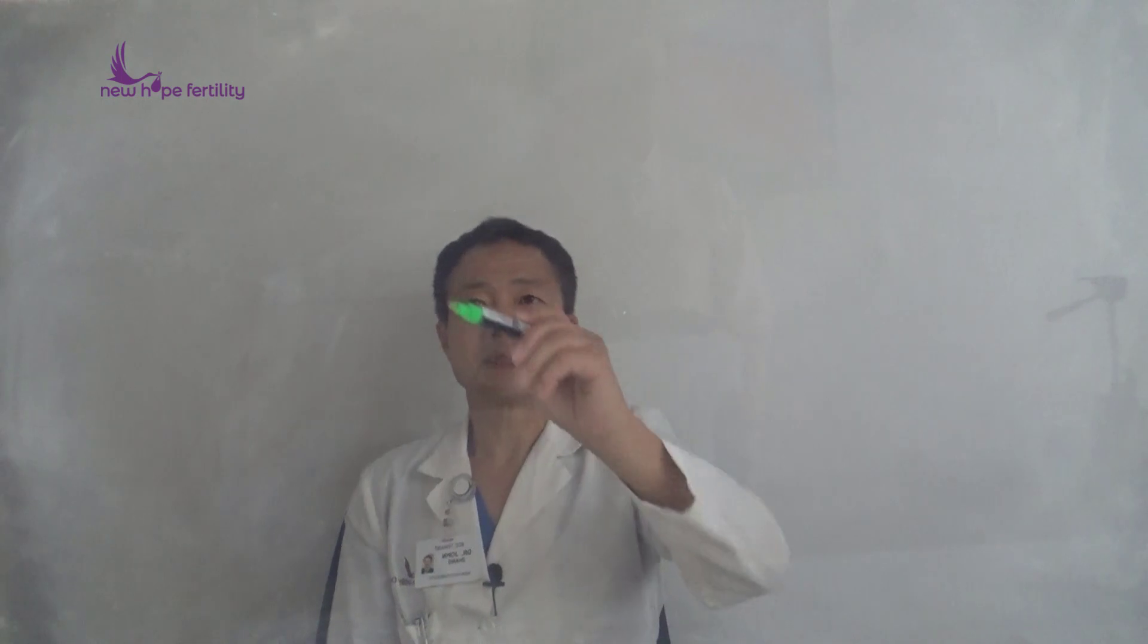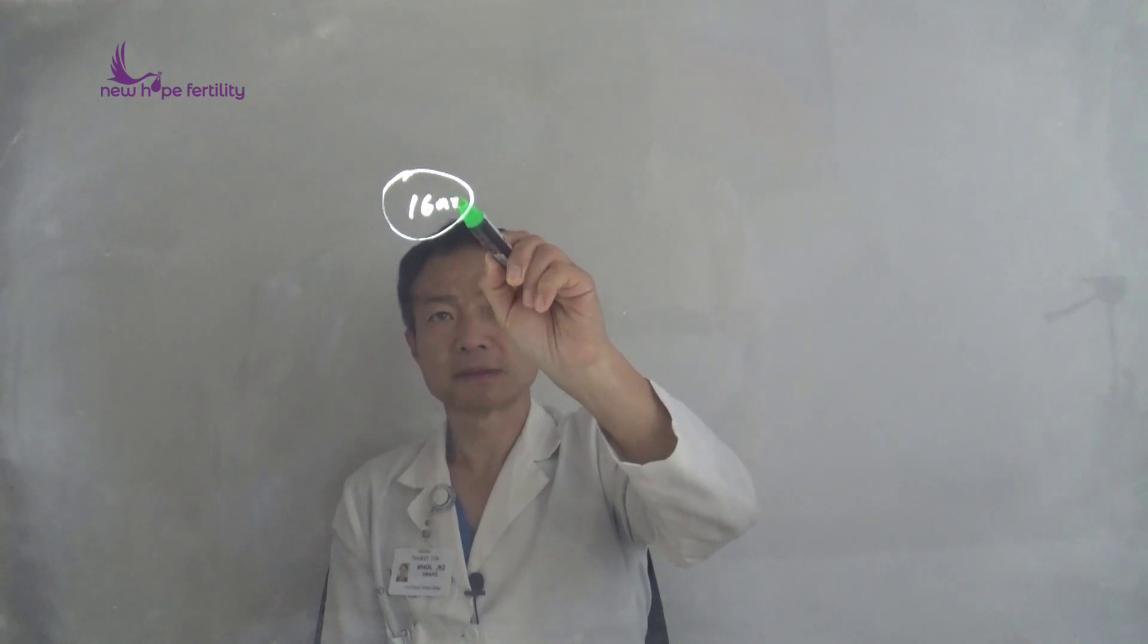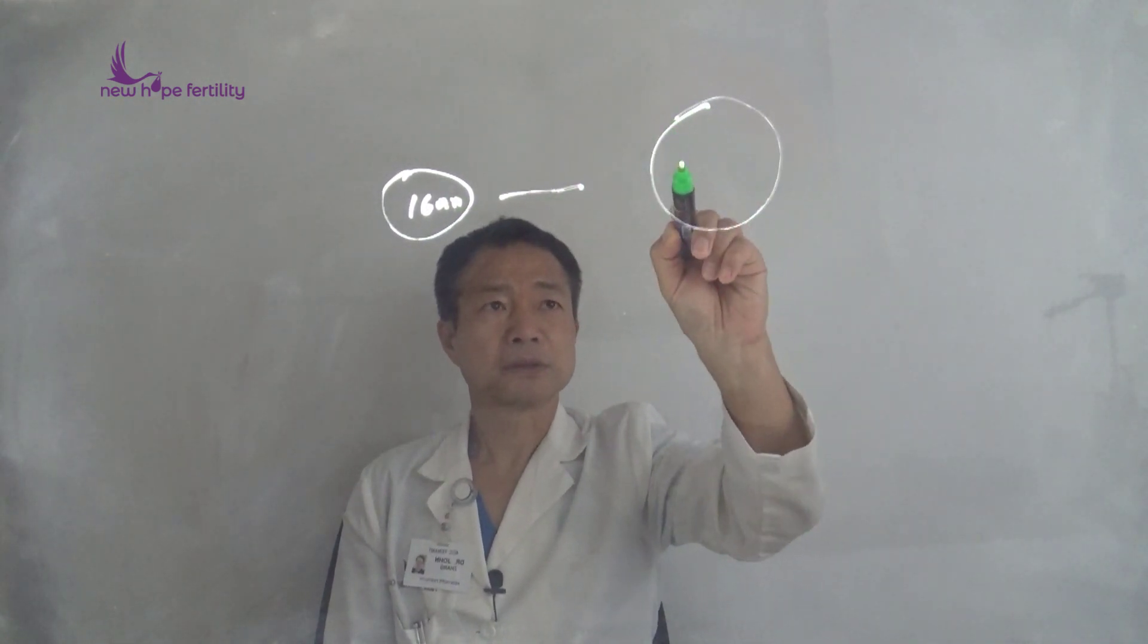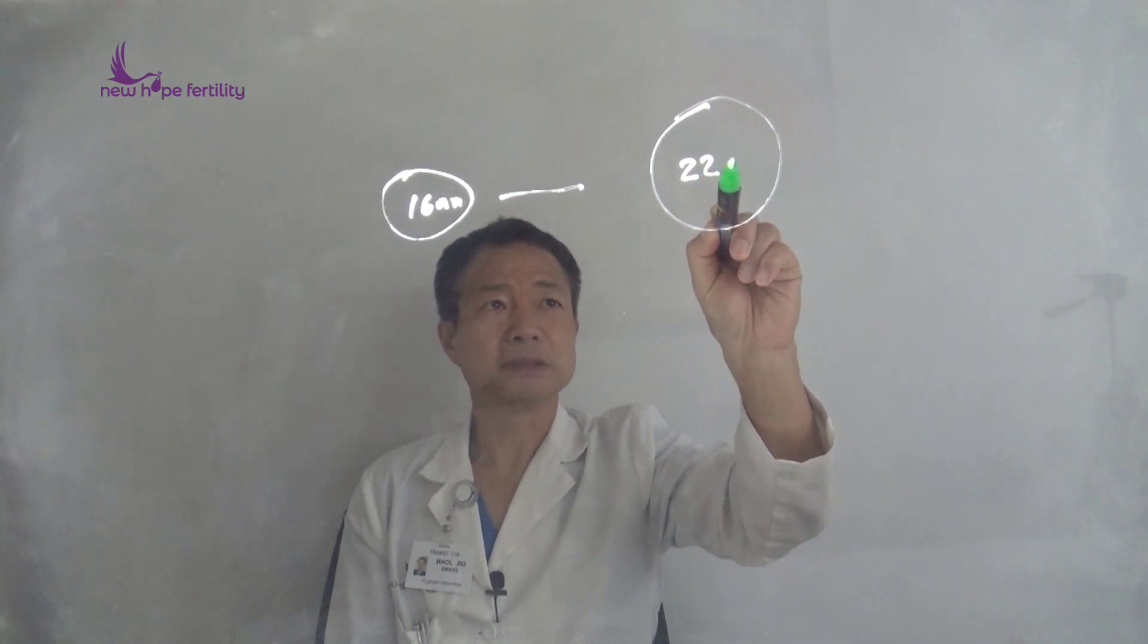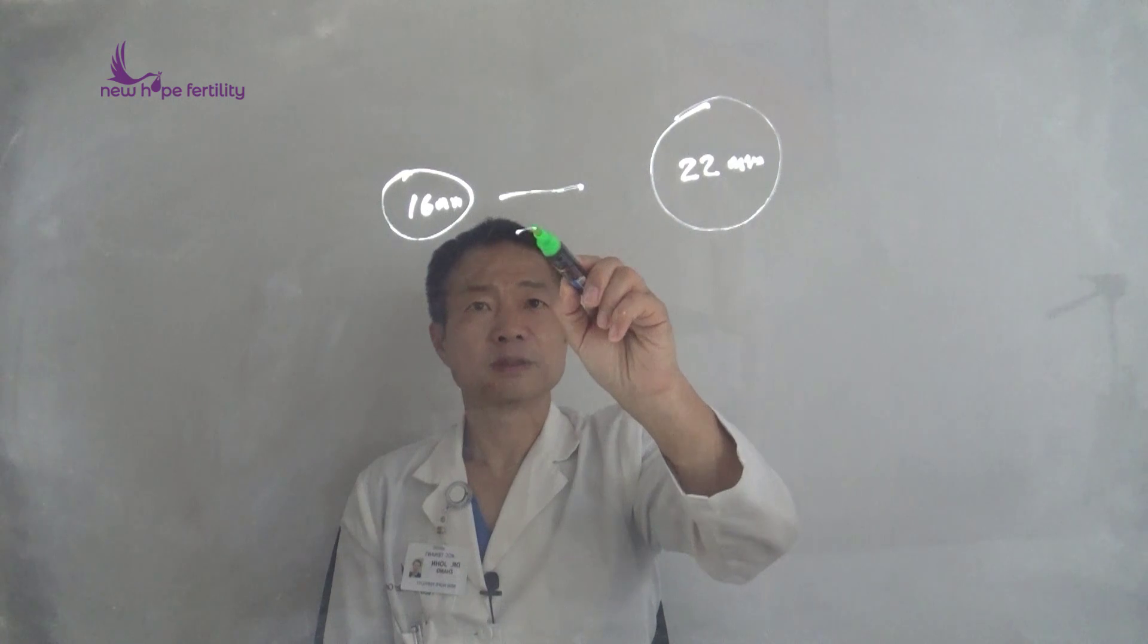To answer this question, I will tell you as follows. Generally speaking, the size of follicle when they reach 16 millimeters to 22 millimeters, either time may be needed to be triggered.